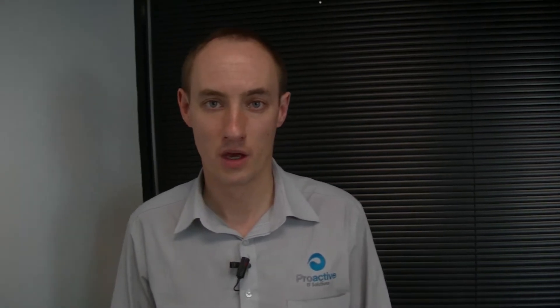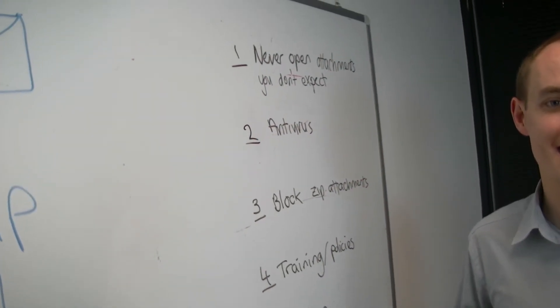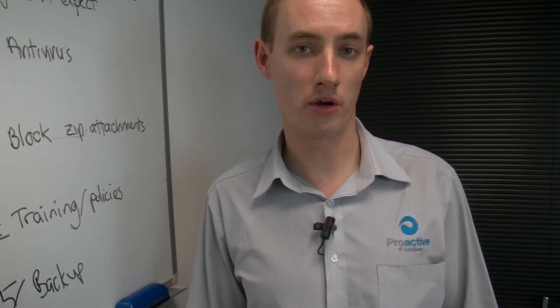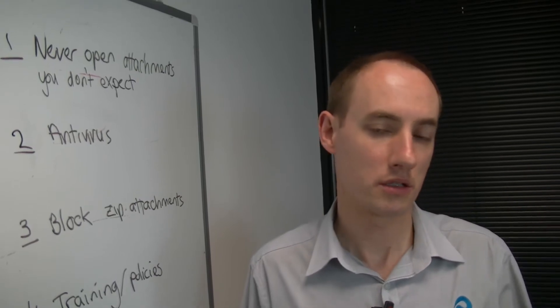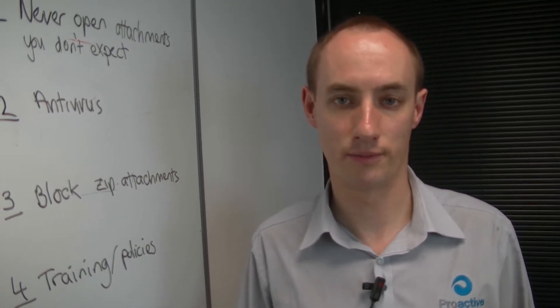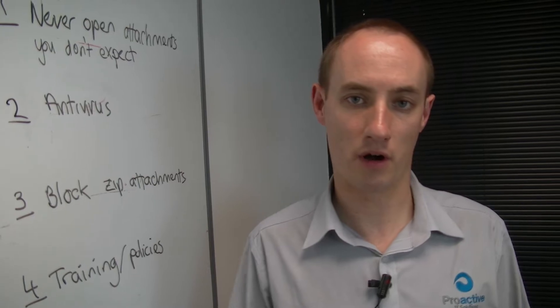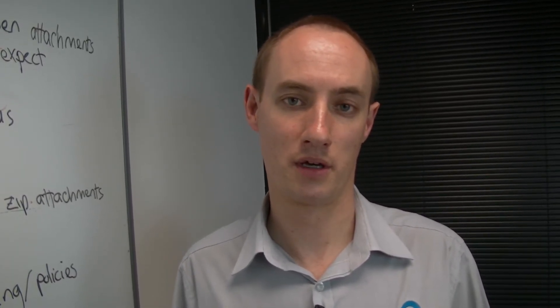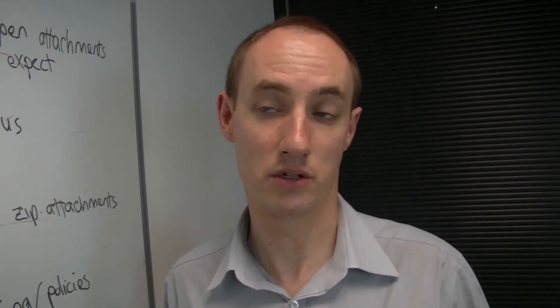How do you protect yourself from getting one of these nasty infections? Well, there's five steps. First of all, never open an attachment that you don't expect. If you get an attachment from someone you know and it looks a bit strange, simply give them a call or email them and ask if they meant to send it to you. It's a very common strategy — these viruses infect someone's system and then send an email out to everybody in the address book of that person. Always pay attention to those attachments and if they look strange, don't open them. If you're unsure, contact your IT support company and they'll be able to advise you on whether or not the attachment is a bit dodgy.